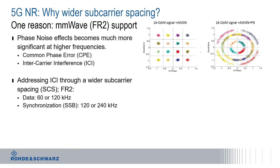The two challenges with inter-carrier interference — what we do is address that through a wider sub-carrier spacing. In FR2 for 5G New Radio, the data and control channels could utilize 60 or 120 kilohertz. And the synchronization signal block, the SSB, can utilize either 120 or 240 kilohertz.